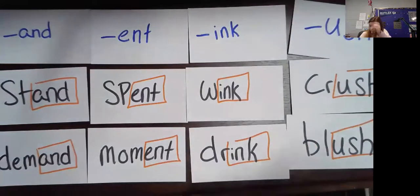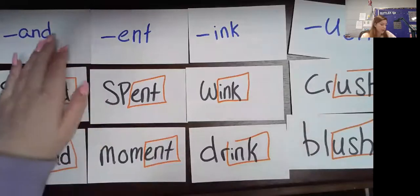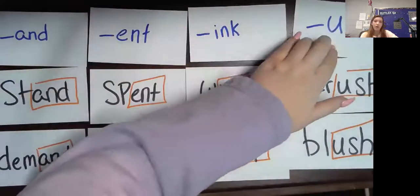So hopefully seeing that helps you sort your words. You are now going to go back to the Seesaw page and you are going to sort words using these same endings: A and D, E and T, I and K, and U-S-H.